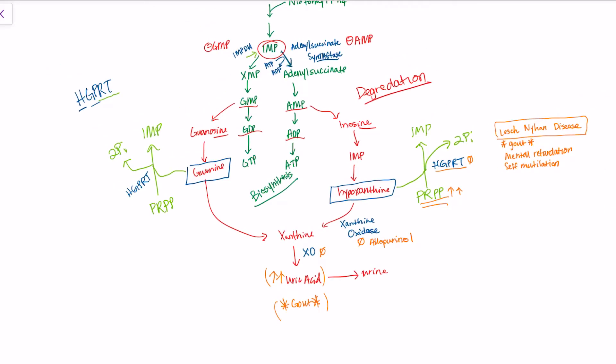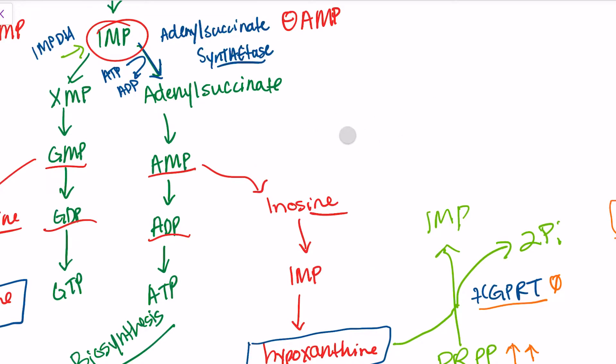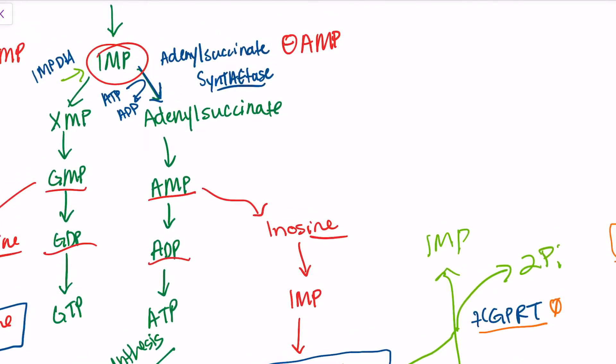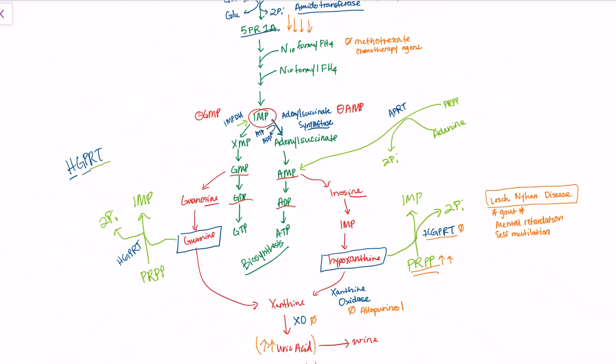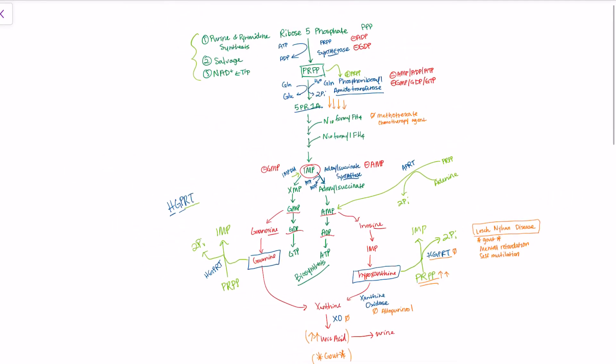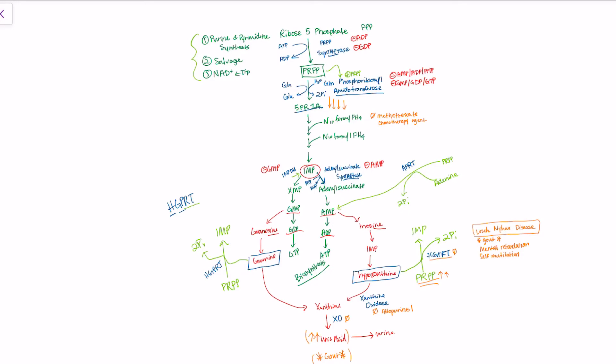The last thing we haven't talked about is the other enzyme that does salvage. We have HGPRT, but we also have APRT, which takes adenine to AMP. Very similar, but we're going to AMP from PRPP and adenine. Adenine goes in, phosphate groups get kicked out, and we're left with AMP. I believe that concludes this video about purine biosynthesis, salvage, and degradation pathways. If you have any questions, please feel free to leave a comment. Thank you for watching.